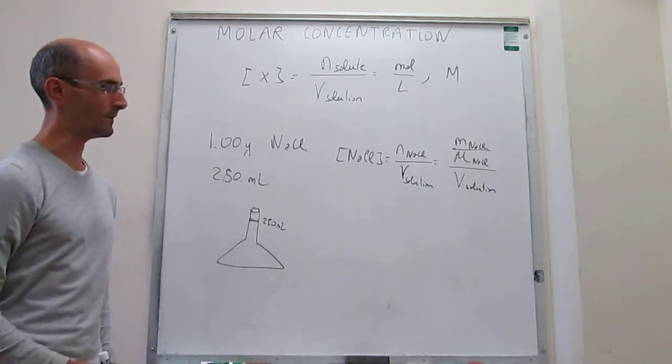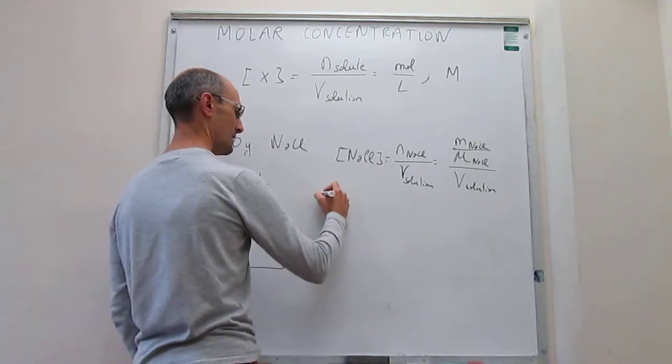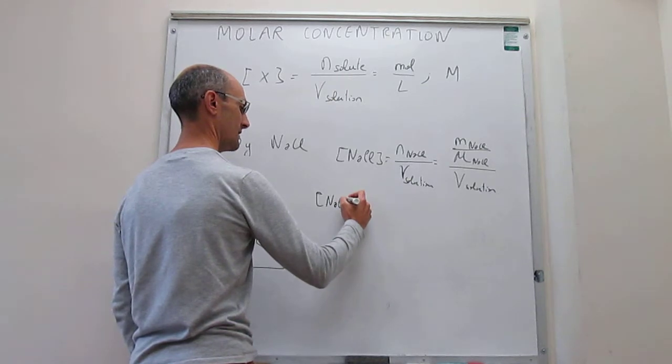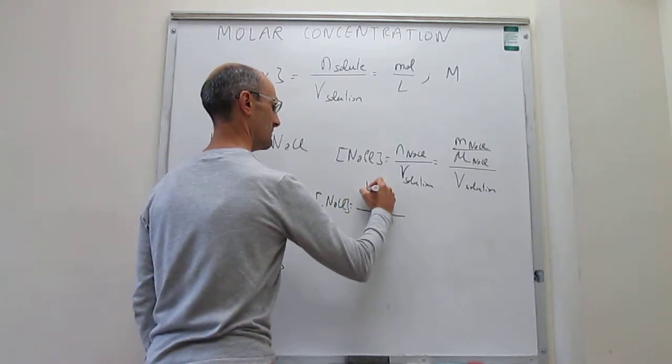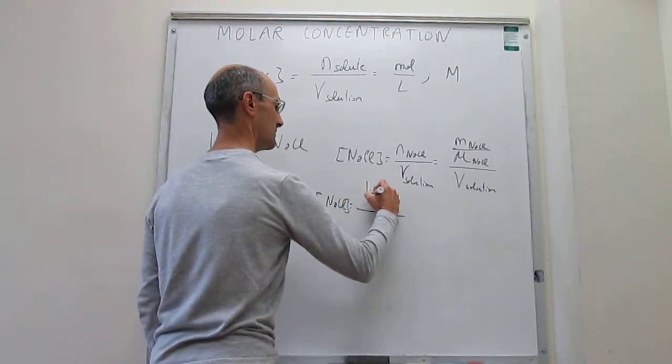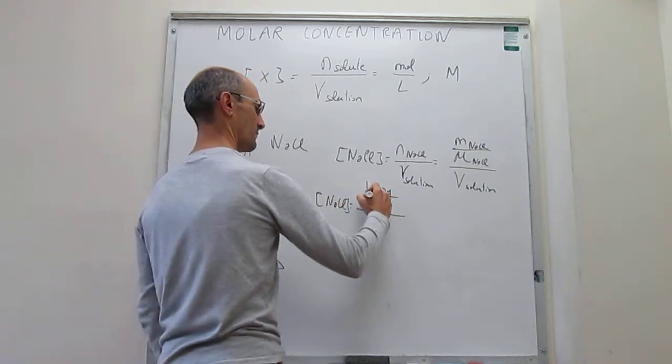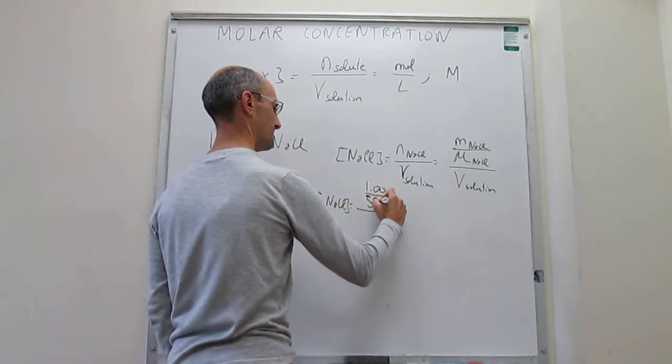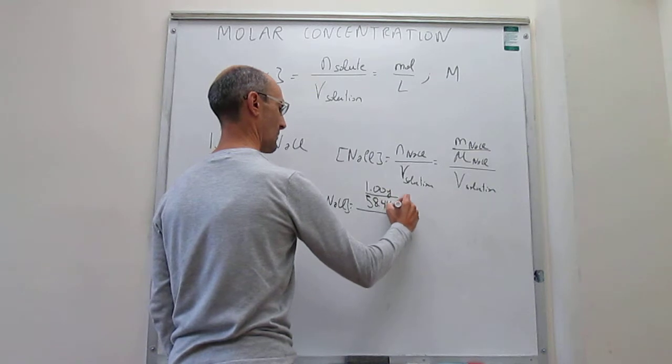We look at the molar mass of sodium chloride, and then we find that that mass is 58.44 grams per mole.